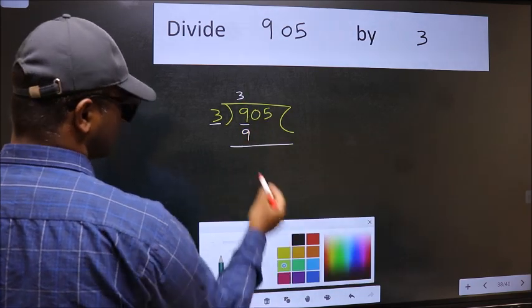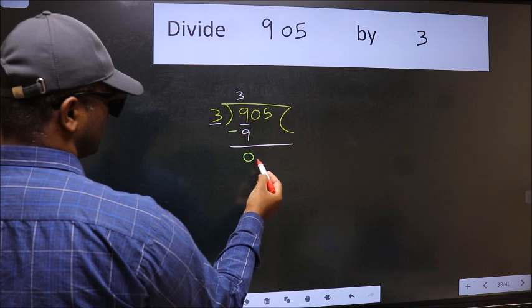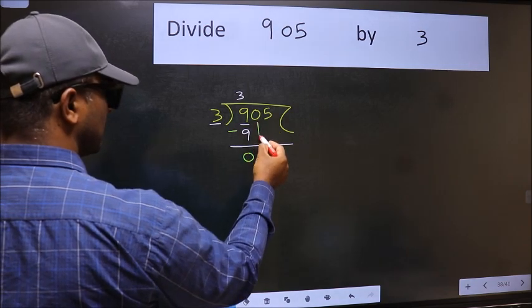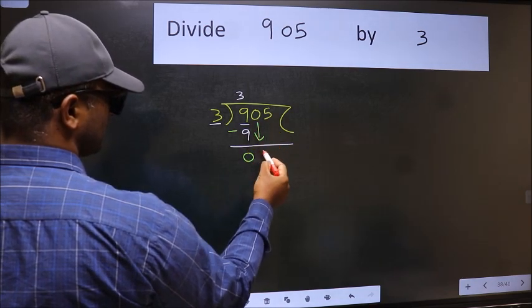Now we should subtract. We get 0. After this, bring down the beside number. So 0 down.